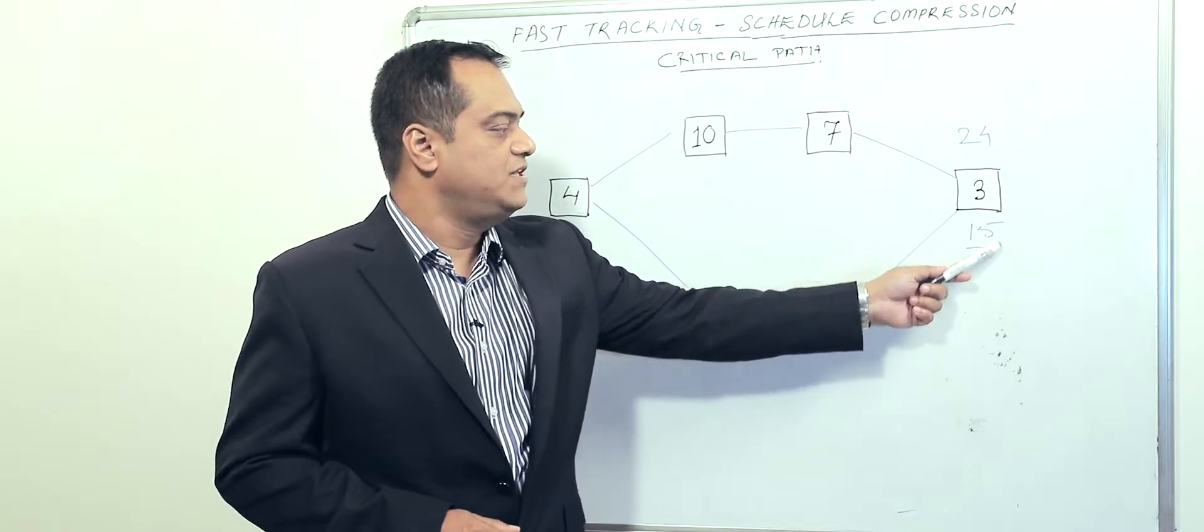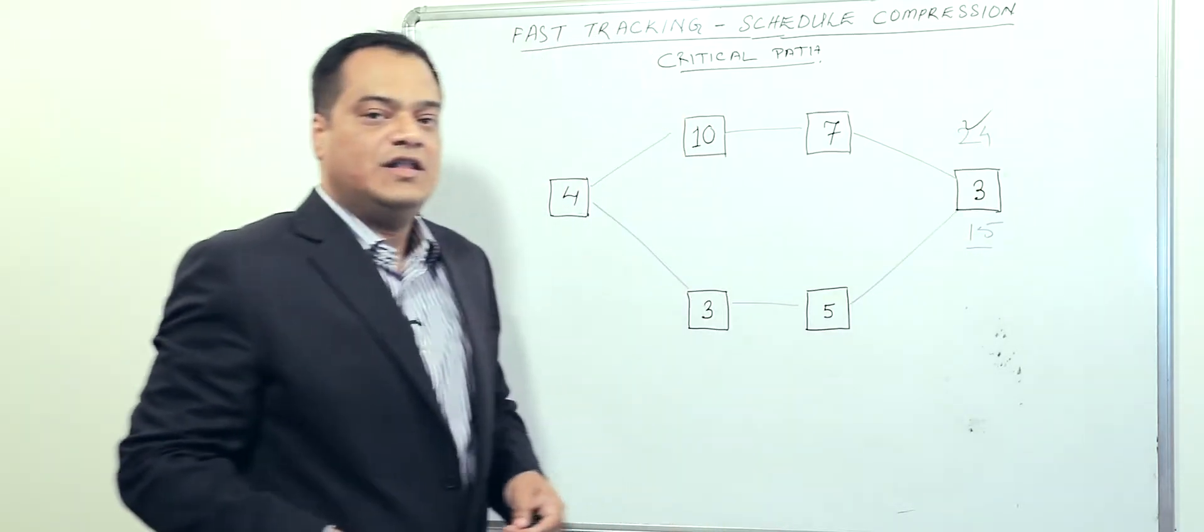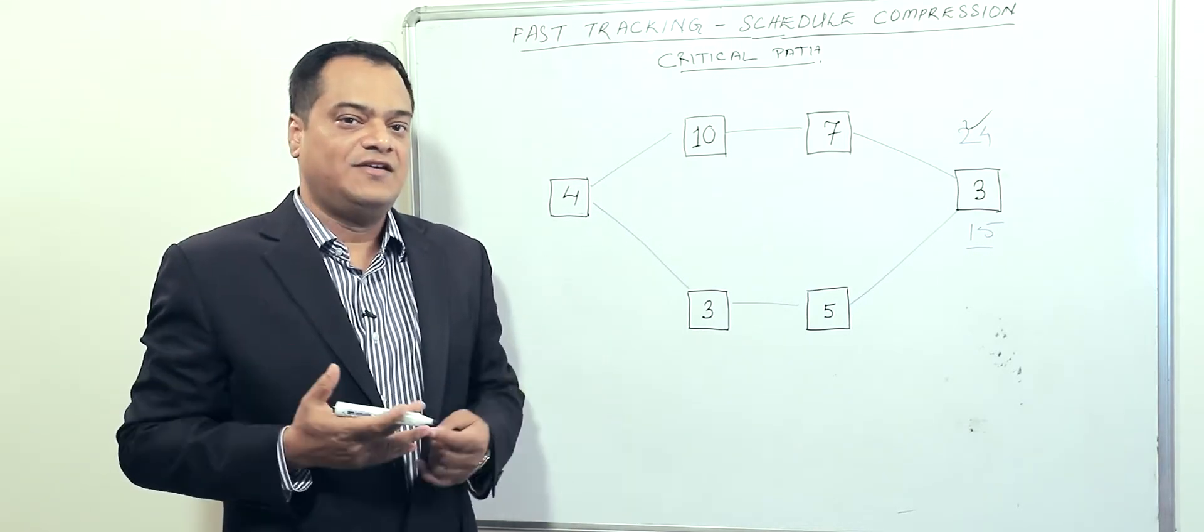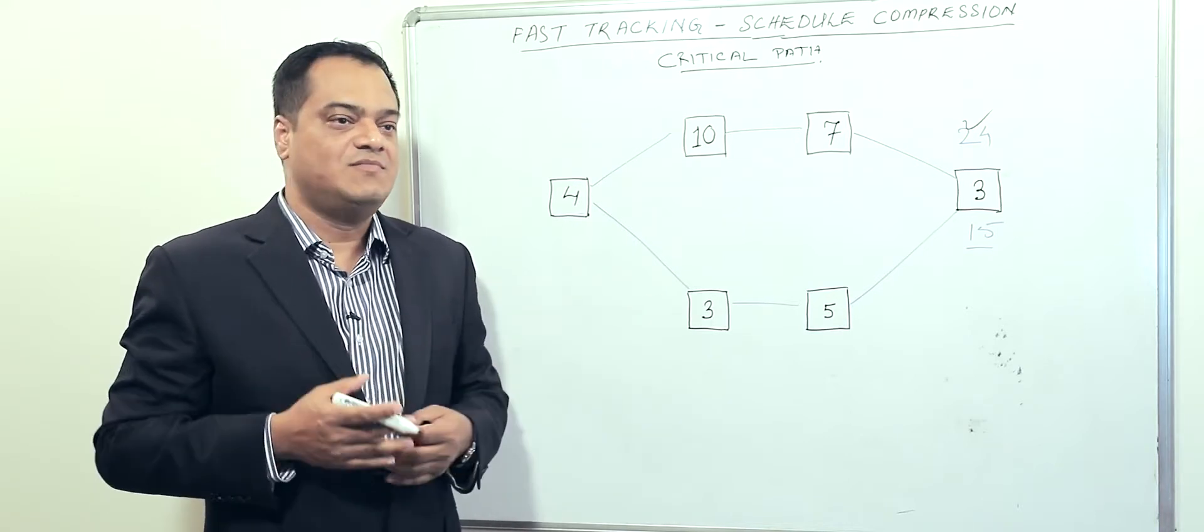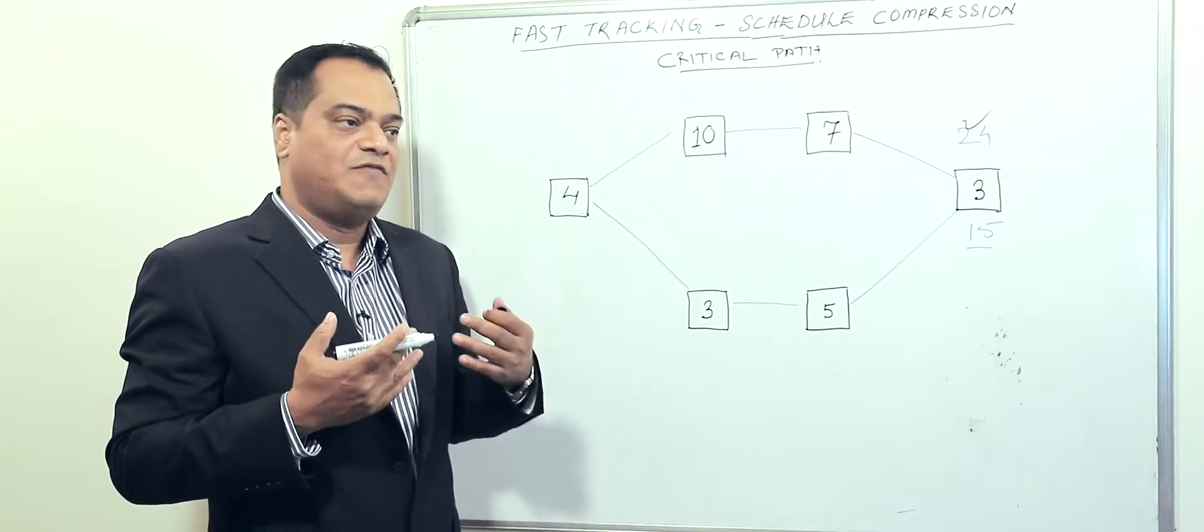Our critical path is 24. Obviously, management comes and tells us 24 weeks is too high - somehow you have to compress this number. We cannot go with 24, so we have to find a way to reduce this.